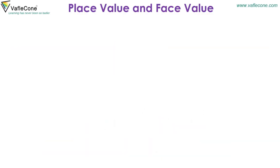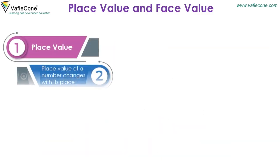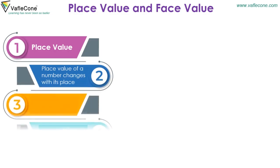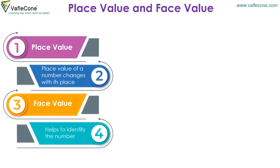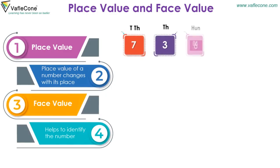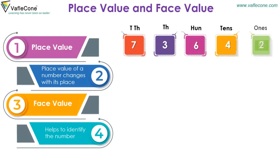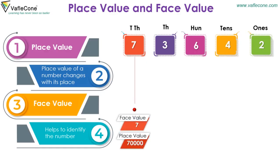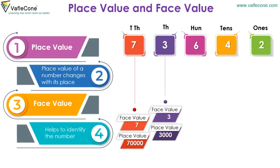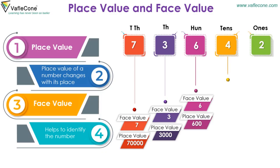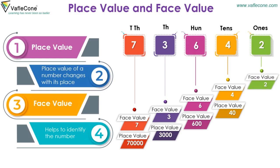Place value and face value: For the number 73,642 — for 7, face value is 7 and place value is 70,000. For 3, face value is 3 and place value is 3,000. For 6, face value is 6 and place value is 600. For 4, face value is 4 and place value is 40. For 2, face value is 2 and place value is 2.